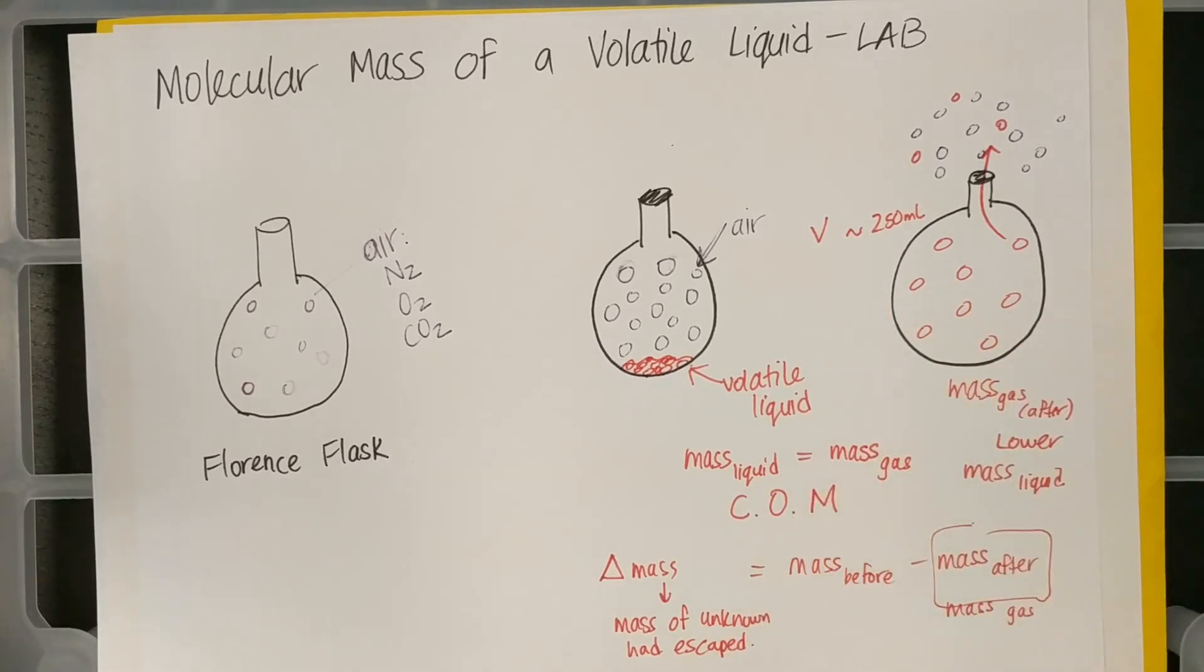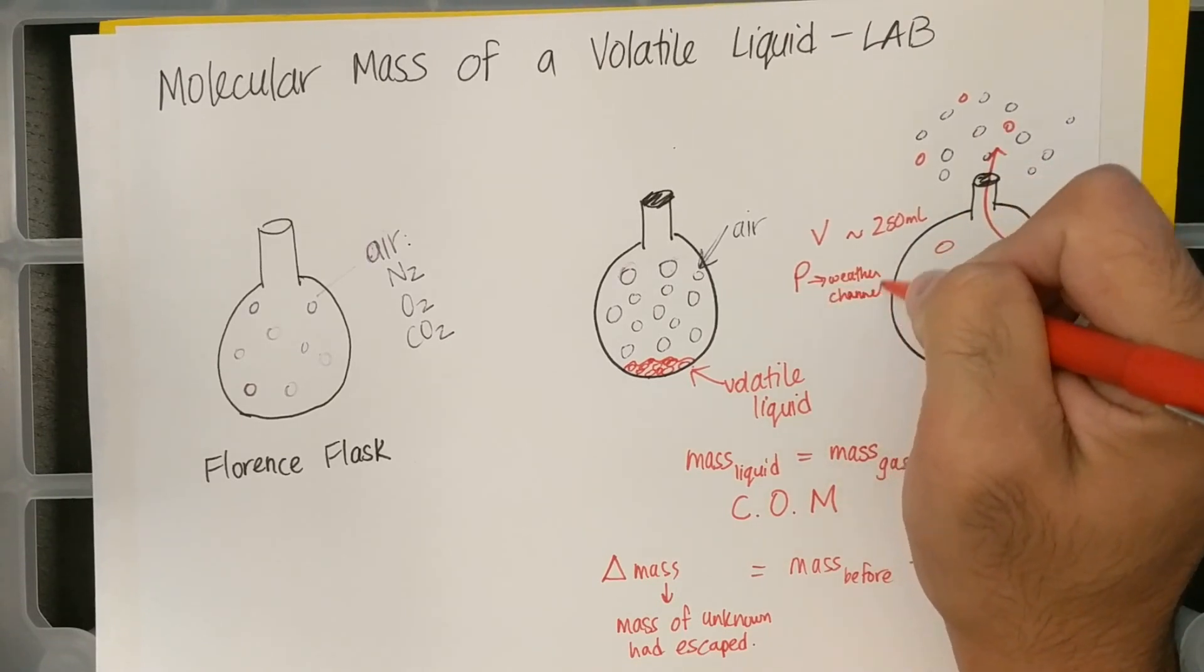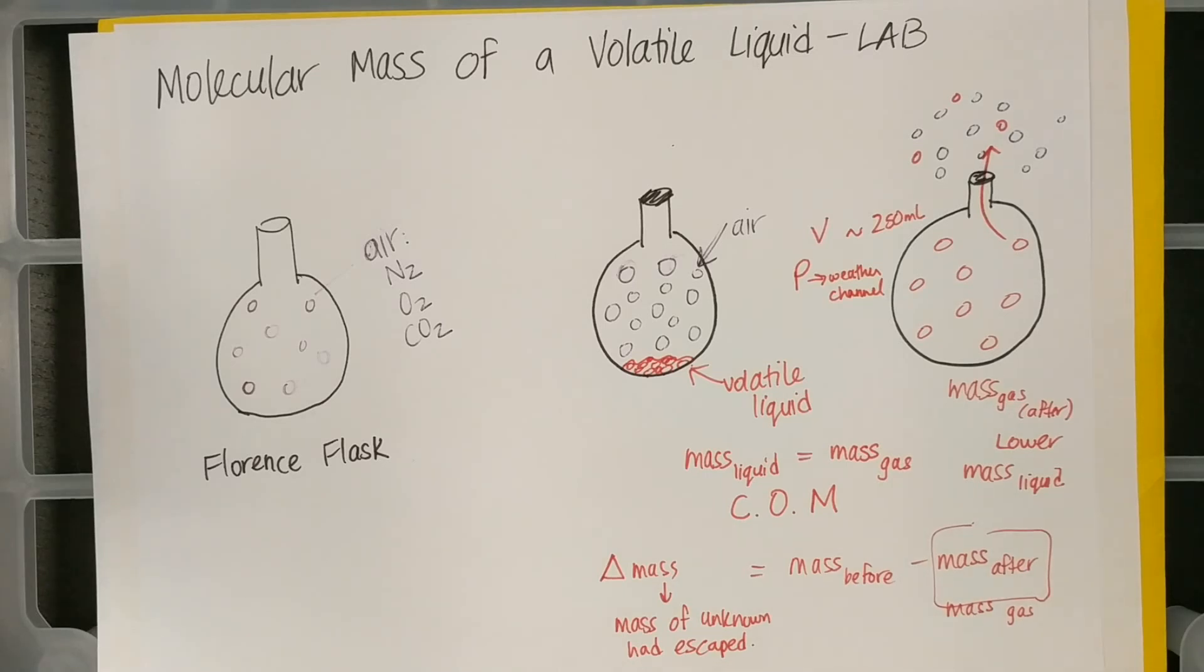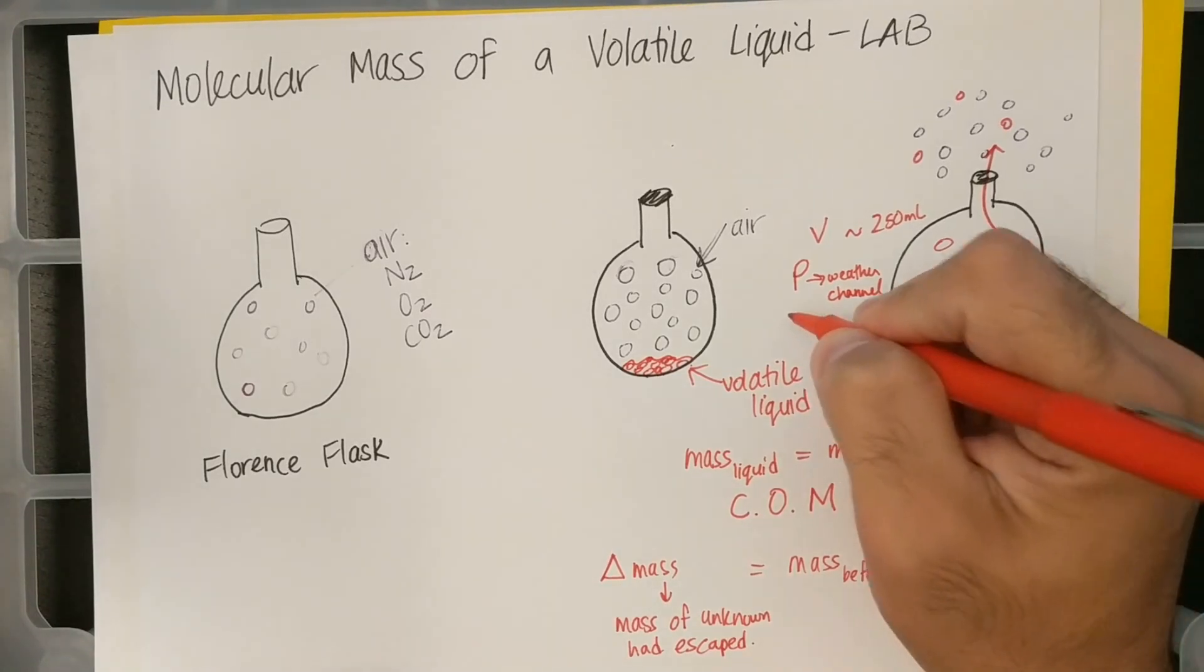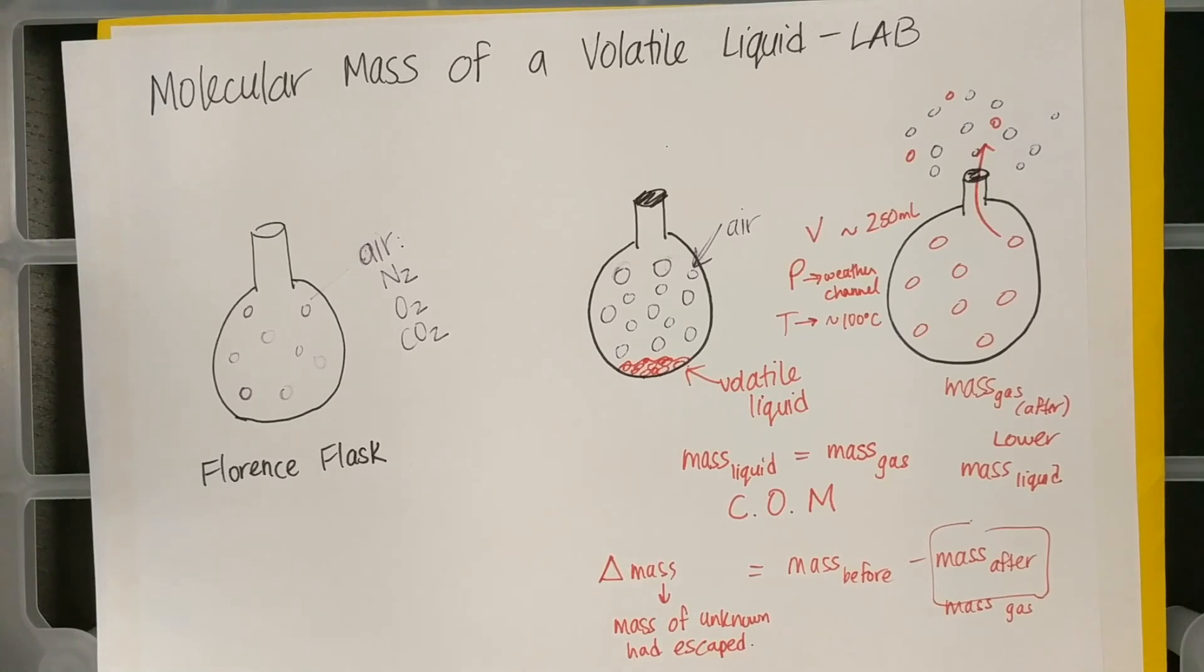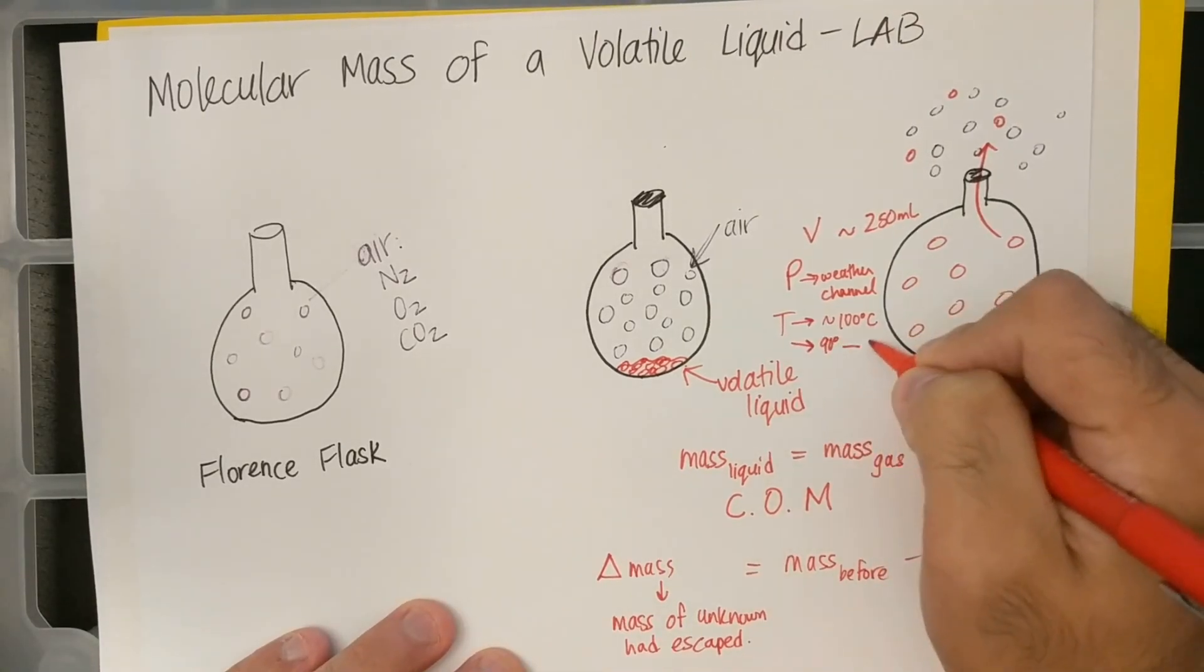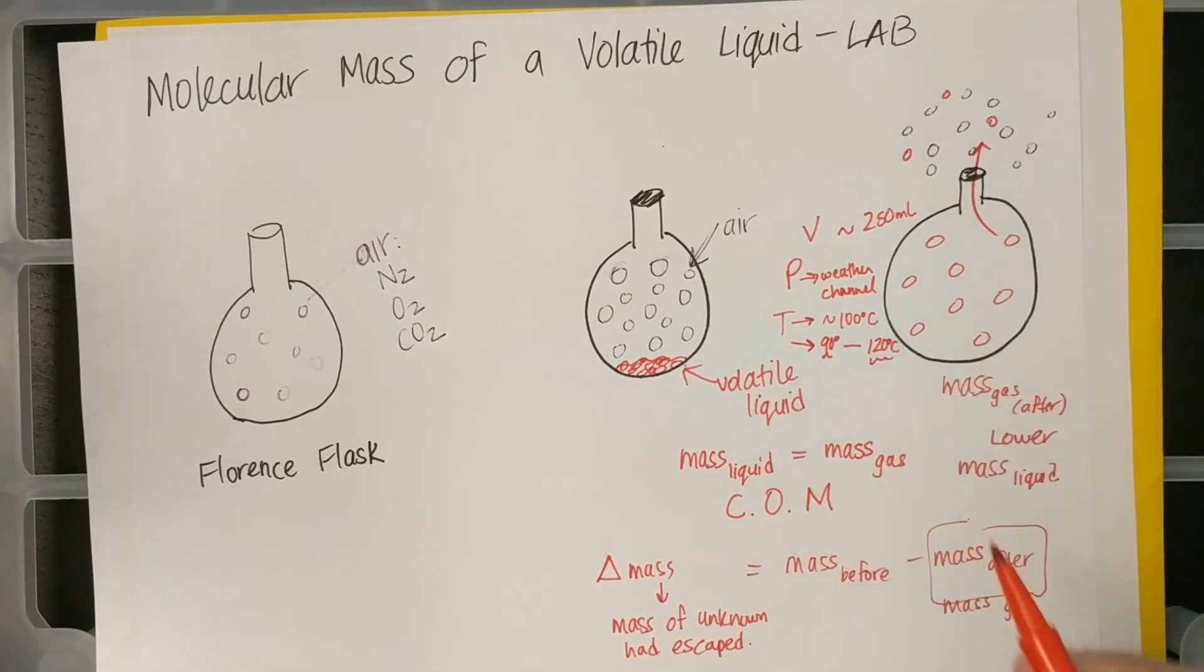If this change in mass was zero, then that means you did a great job. All of your liquid stayed within and boiled within the container. Okay, and so you'll have your mass of your gas, you have your volume, I told you to get your pressure from Weather Channel. So you have your pressure, your volume, and your mass. And I asked and assumed that the temperature was about 100 degrees Celsius. The temperature will be about 100 degrees Celsius, but I told some of your groups to make sure, poke it with a thermometer, and some of you were getting somewhere between 90 degrees Celsius and 120 degrees Celsius.